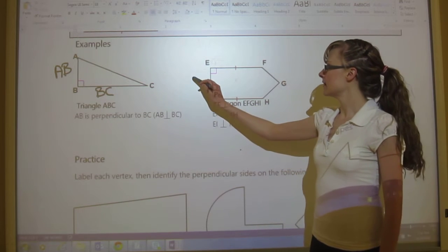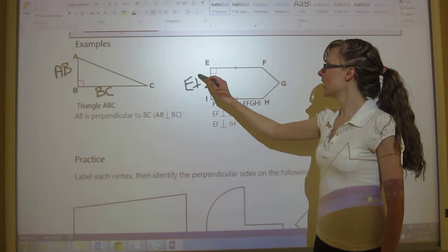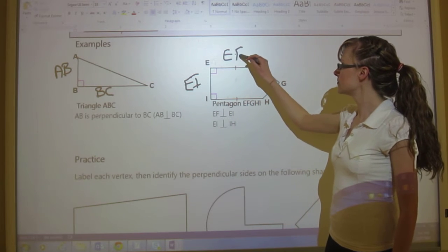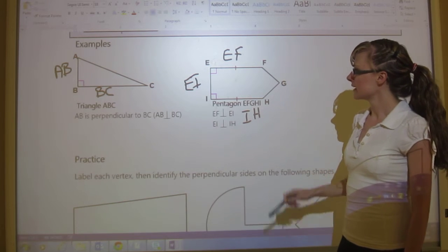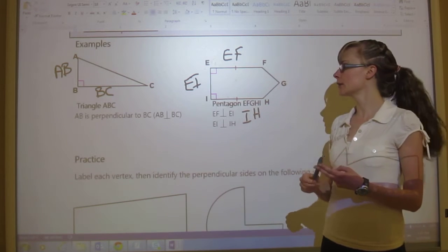And so that means that this is EI, this is EF, this one is IH. So there are two perpendicular parts.